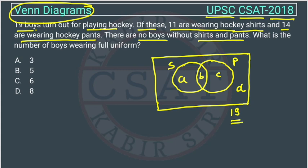The total number is 19, and we always write the total number outside the rectangular box. The number of boys wearing shirts is 11, and the number wearing pants is 14. They have given that there are no boys without shirt and pants, so D is 0.